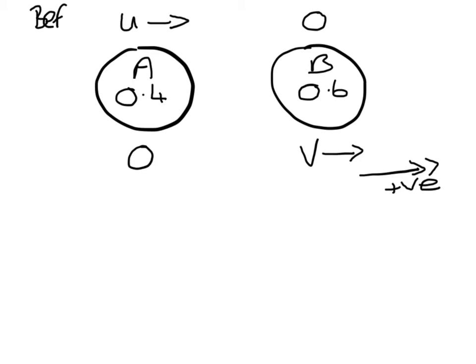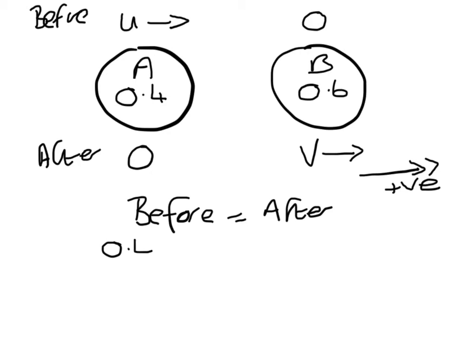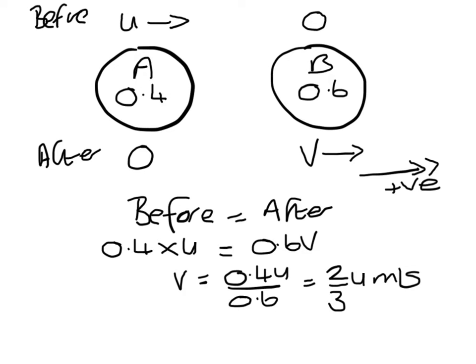So I have my speeds before and my speeds after. Conservation of momentum tells us that before has to equal after. And momentum is mass times velocity. So before we have 0.4 times U has to equal after 0.6 times V. So V will be 0.4U over 0.6, so that's 2 thirds U meters per second.